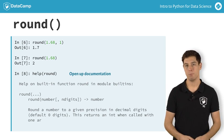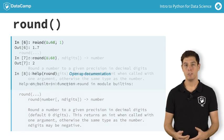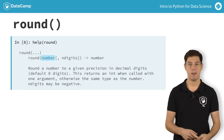It appears that round takes two inputs. In Python, these inputs, also called arguments, have names: number and n digits.